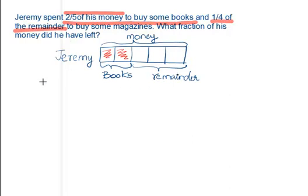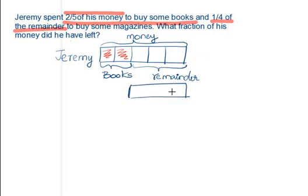This portion is the remainder. We have to choose 1 out of 4 of this portion. Currently, how many units are there? There are 3 units. And this 3 has to be divided into 4 parts. Let's see how this can be done — right now it is divided into 3 parts; how can we convert this into 4 parts?